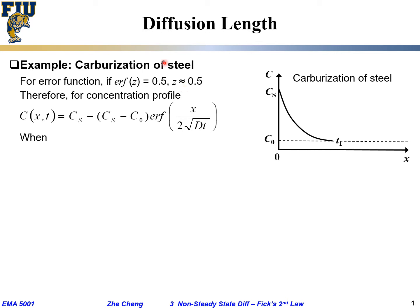So what that means is, if this whole error function is 0.5, what happens to C? The C would be Cs minus (Cs - C0) times 0.5, which means divided by 2. We can further simplify to, the negative negative C0 becomes positive, Cs minus half of Cs becomes half of Cs.